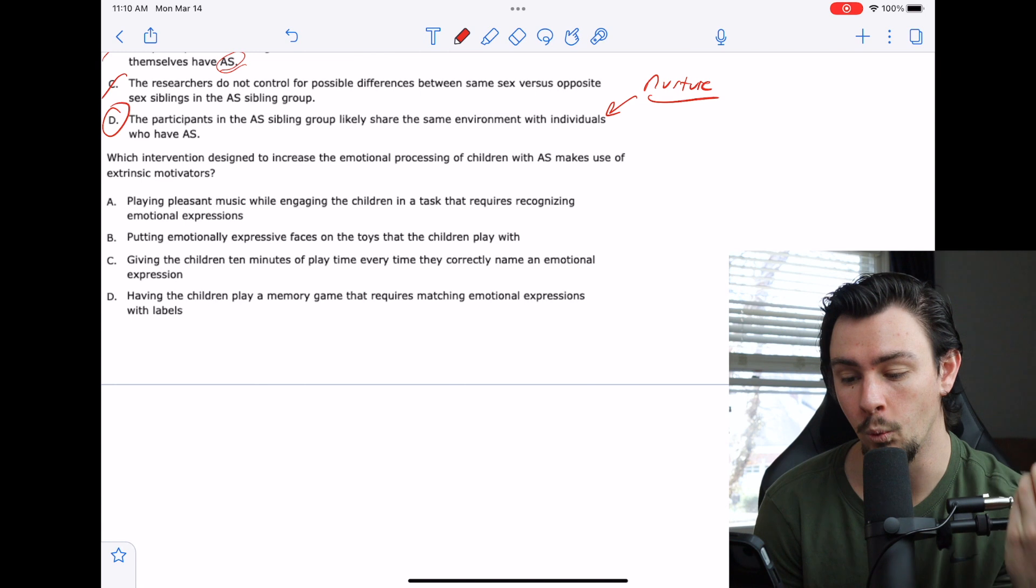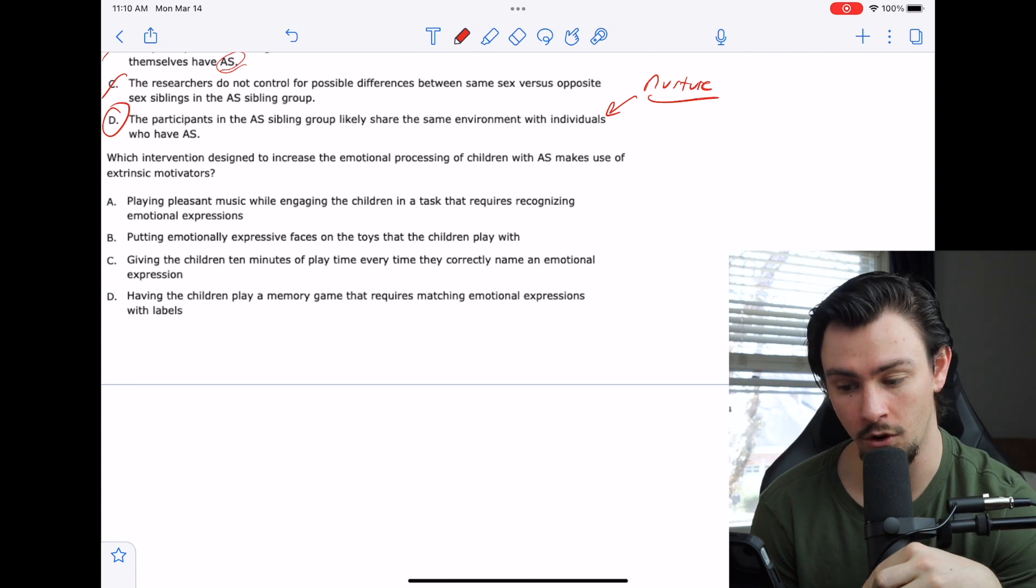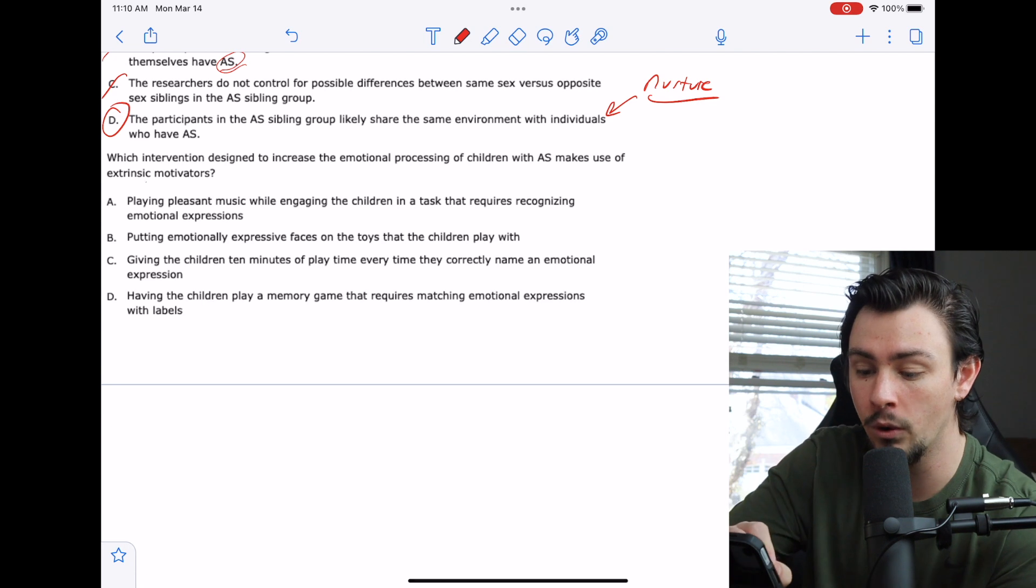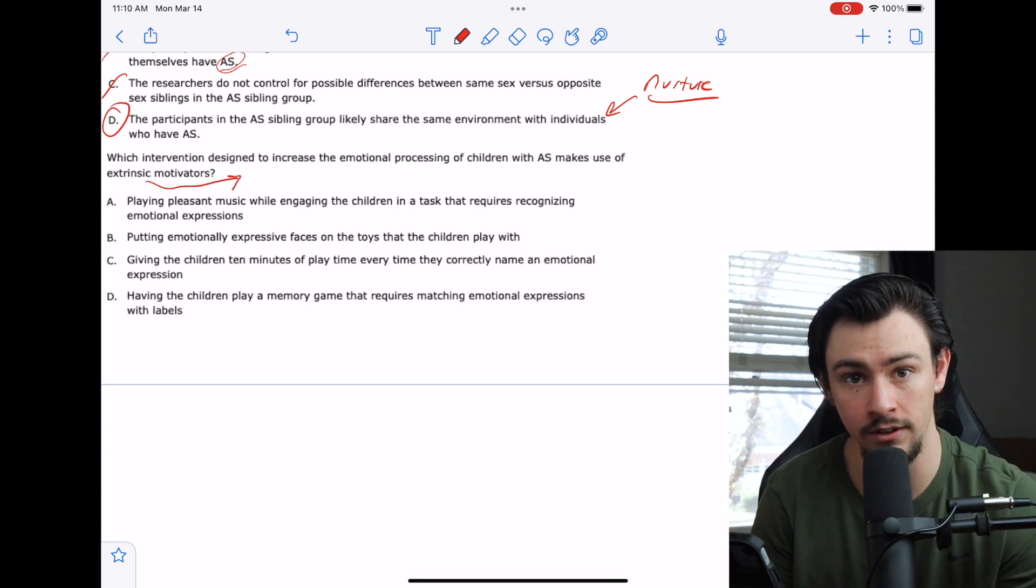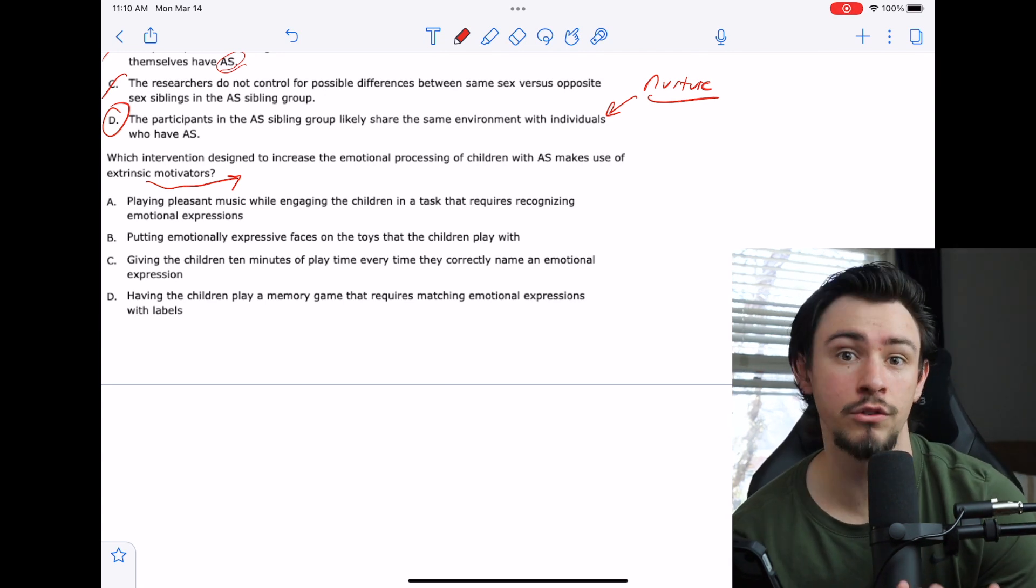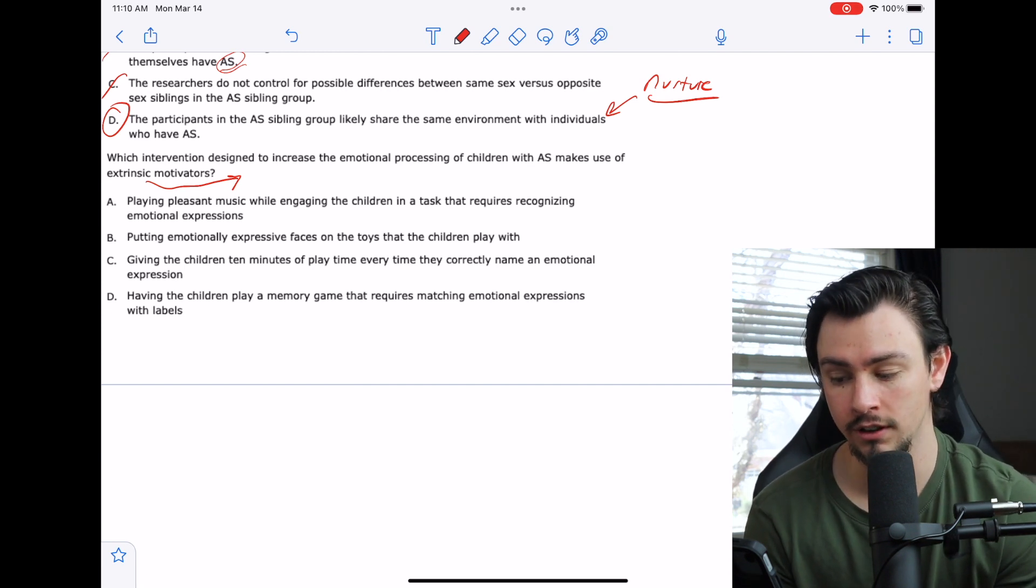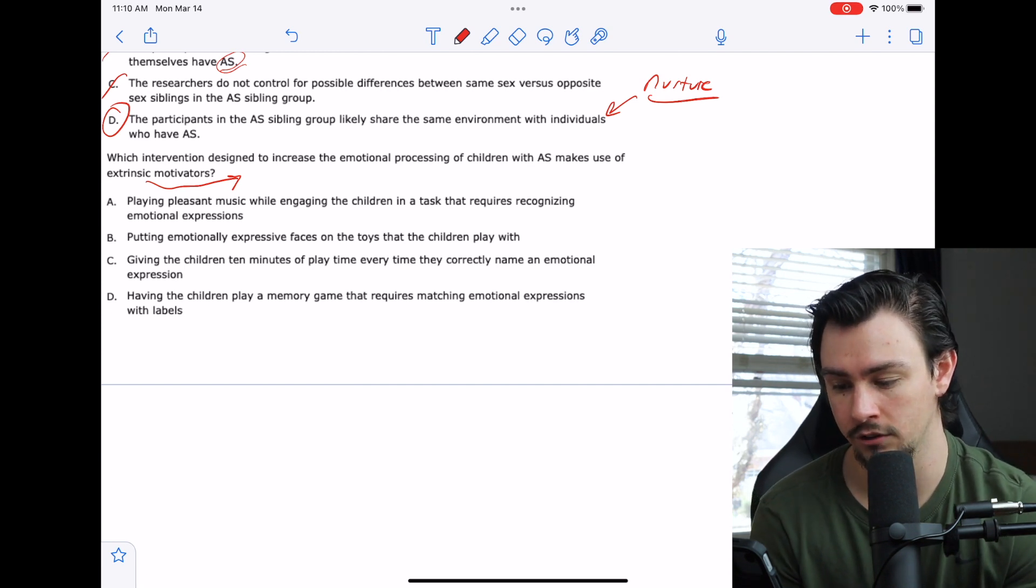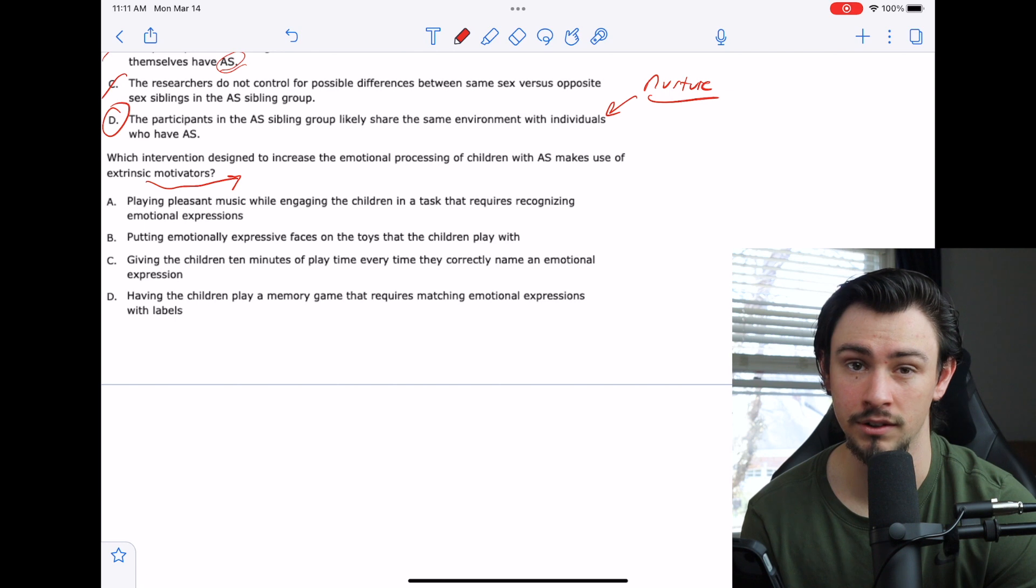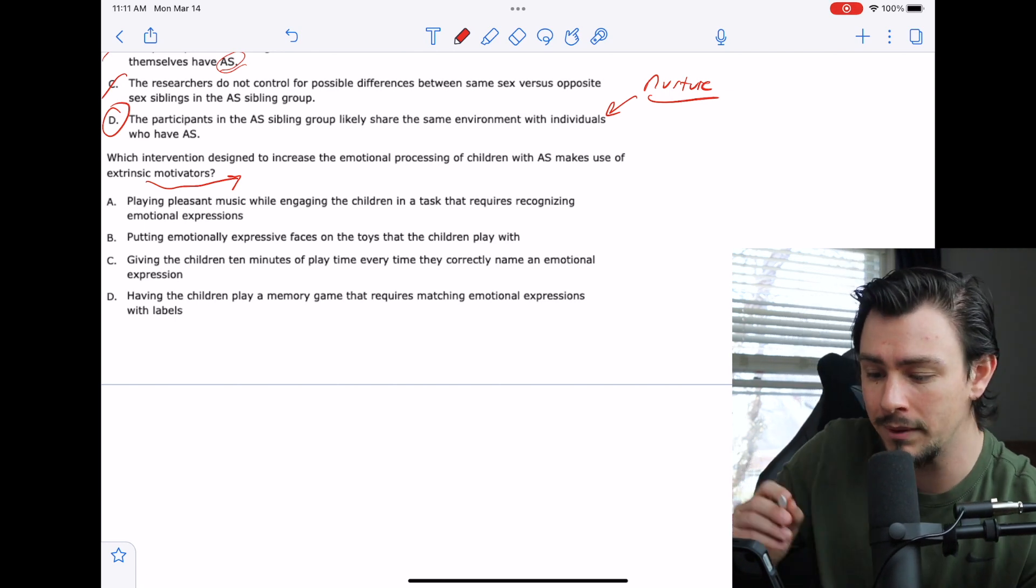The last one says, which intervention designed to increase the emotional processing of children with Asperger's syndrome makes use of extrinsic motivators? Really fancy way for them to say, what is an extrinsic motivator? It's going to be something outside of yourself. You generally think of material stuff that's going to motivate you to increase doing a behavior. A says playing pleasant music while engaging the children in a task that requires recognizing emotional expressions. That is changing the environment, but it's not motivating them to continue.